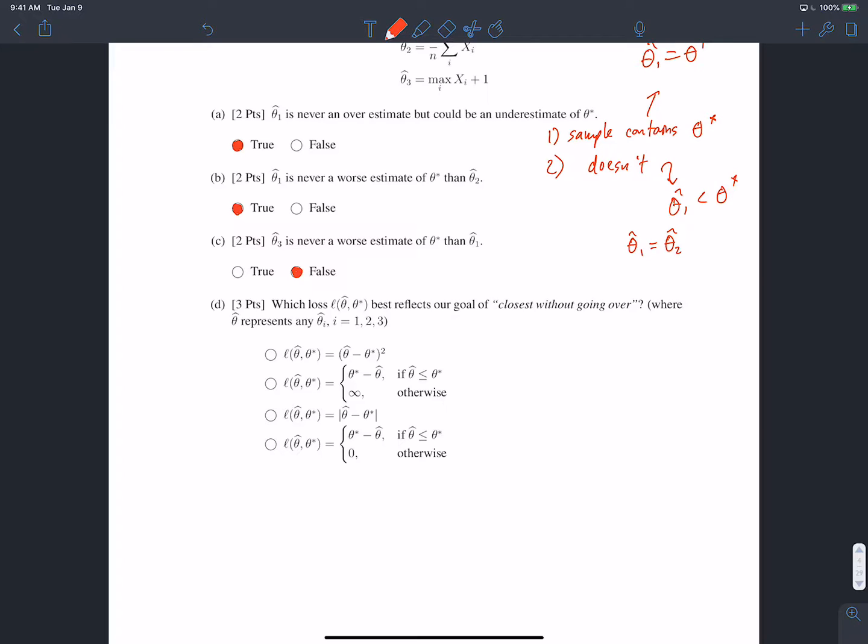Lastly, part d, we're asked to determine which loss function L of theta hat comma theta star best reflects our goal of being closest to theta star without being larger than. So we know that in our loss function, we need to penalize the case when theta hat is greater than theta star. So that means we need to have some sort of if statement. And looking at the options we have here, case one and case three really have no conditions. They treat cases when theta hat is bigger than theta star and theta hat is less than theta star the same because in option three, we're taking the absolute value. So it doesn't matter if the difference is negative or positive, the result will be the same. And in the first case, we're taking the difference of them and squaring it. So it doesn't matter if our estimate is three larger than theta star, three less than theta star, the loss would be the same. So options one and three don't really work.